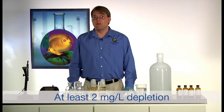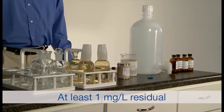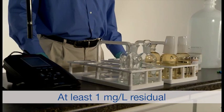In order for a sample to be acceptable, it must have a minimum of two milligrams of oxygen per liter depletion and a residual of at least one milligram of oxygen per liter remaining. This is known as the two to one rule.